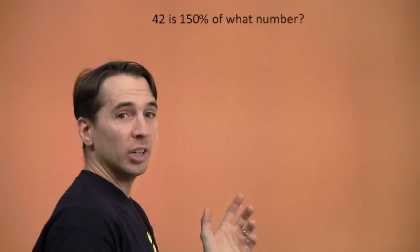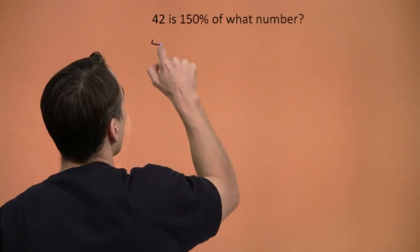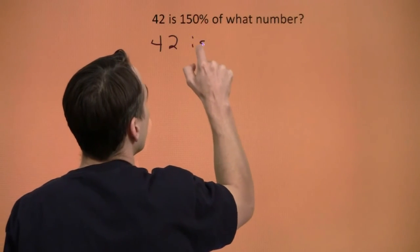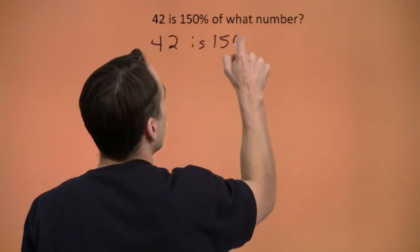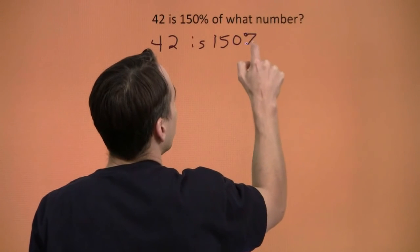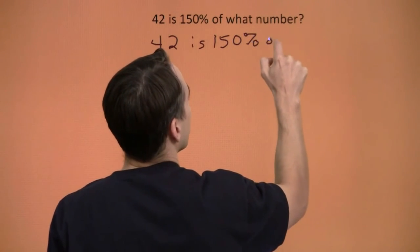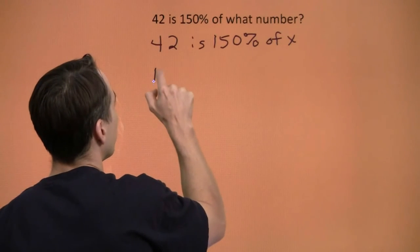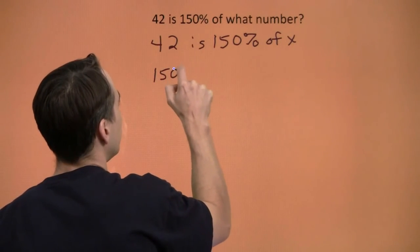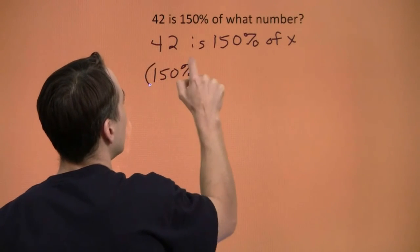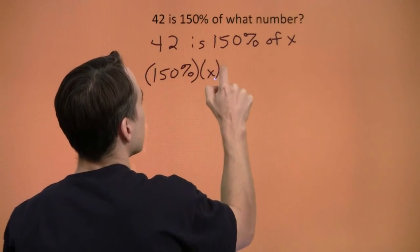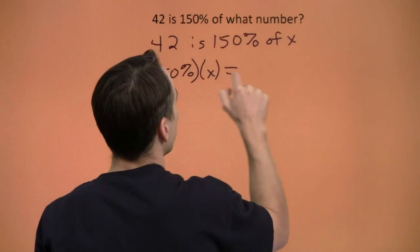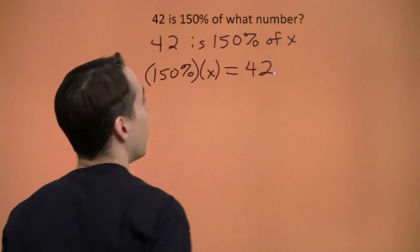Once again, we can start off by turning this into an equation first by throwing in a variable. 42 is 150 percent of x. So 150 percent of x, that's 150 percent times x. Is is equals, and 42, 42 is 42.